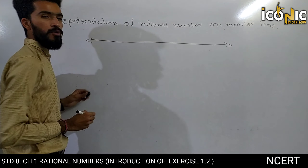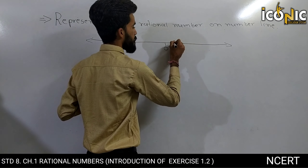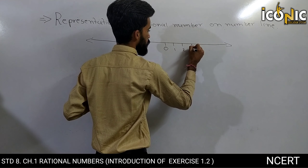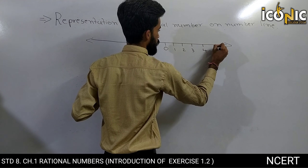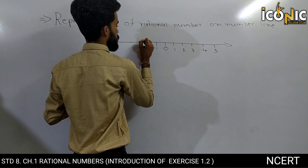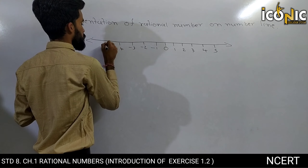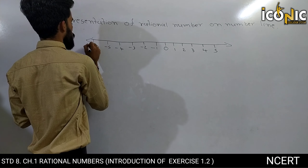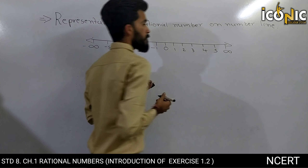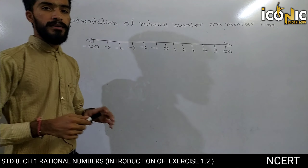First of all we draw a line. In the center there is a zero. In the right side all the positive numbers 1, 2, 3, 4, 5. In the left side negative numbers. Toh is tarah se whole numbers ko represent karte the.